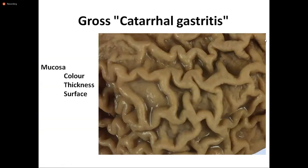Gross catarrhal gastritis: the mucosa is reddish in color, increased in thickness. The surface is covered in abundant exudate rich in mucin. Catarrhal inflammation is mucin inflammation.